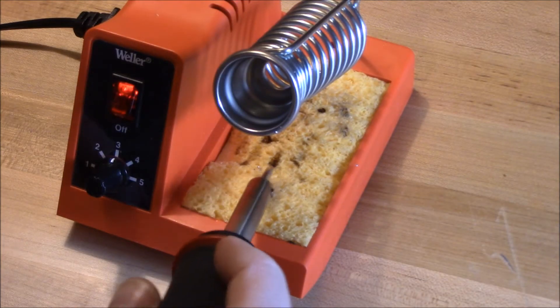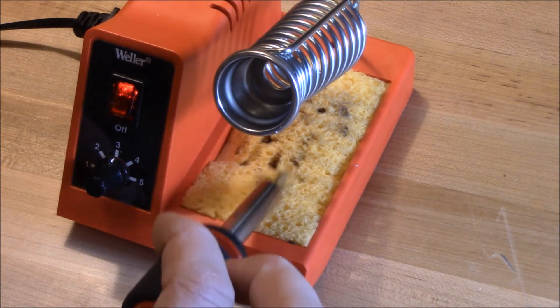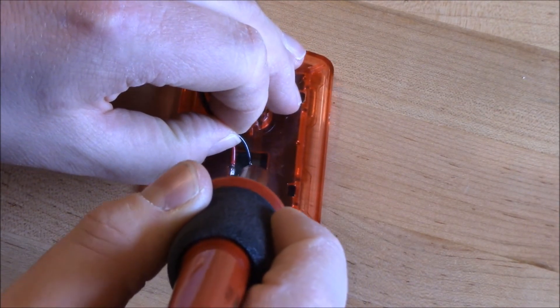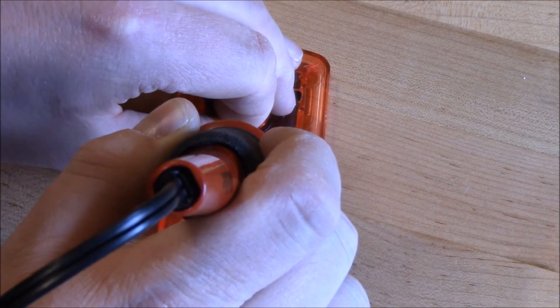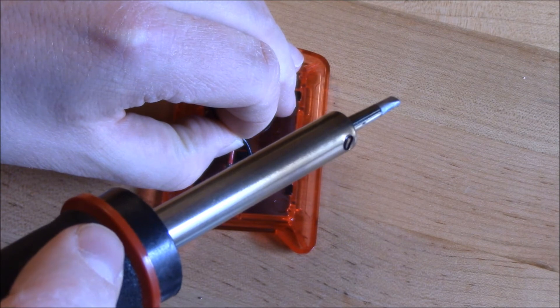So you can see the tip was starting to get a little bit dirty as I did that, and so I'm going to go ahead and clean it here on the wet sponge so we'll be ready to go for our soldering operation. So simply hold the wire in place since it's tinned and the substrate is soldered as well. I'll heat up the wire and that will melt the solder and give me a nice joint.